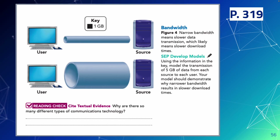Think of bandwidth like the size of a pipe — how much can you fit through it? A bigger pipe means more data at once. The figure shows that one gigabyte equals one square. Model the transmission of five gigabytes of data by drawing five squares in both the narrow and wide bandwidth pipes. Notice how much more efficiently the five squares fit in the wider pipe.